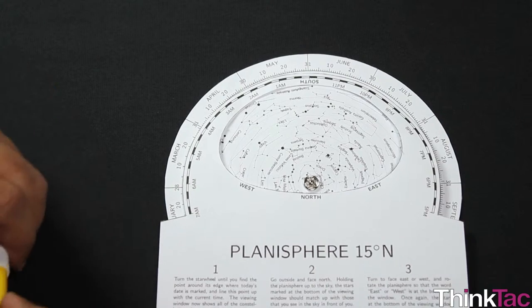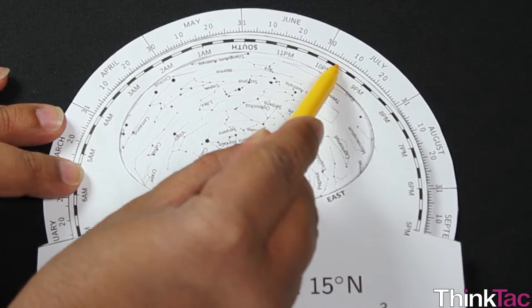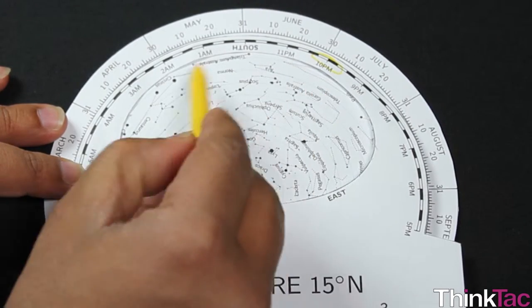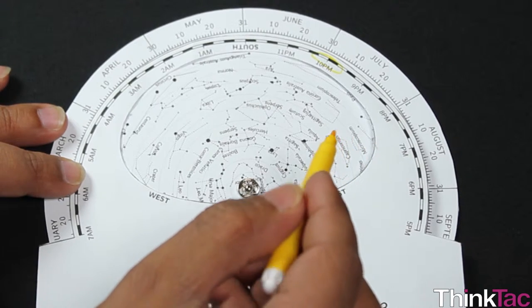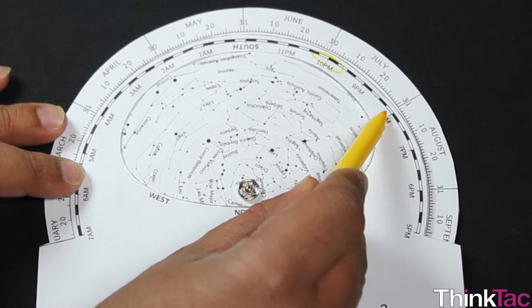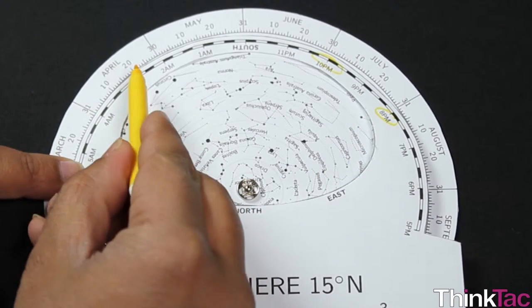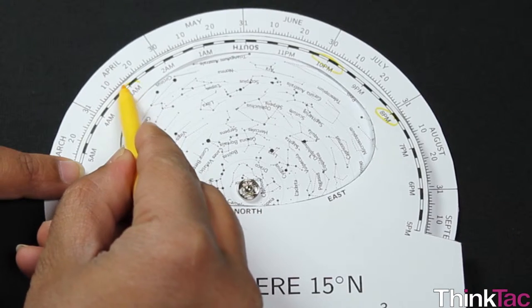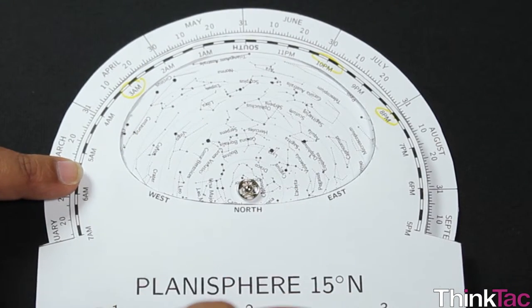So for example, if I look at this setting right now, June 30th at 10pm, this is the sky that we'll see at June 30th at 10 o'clock. It is the same sky that we'll see at August 31st at 8 o'clock or at April 20th approximately at 3 in the morning. We get to see the same night sky.